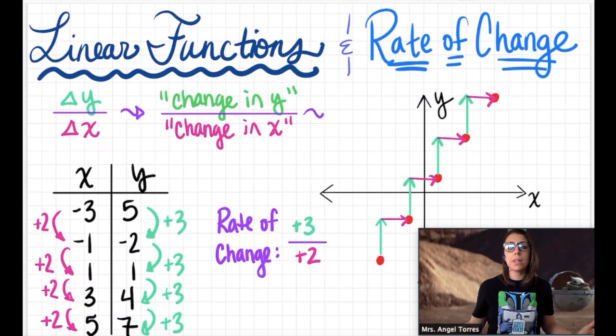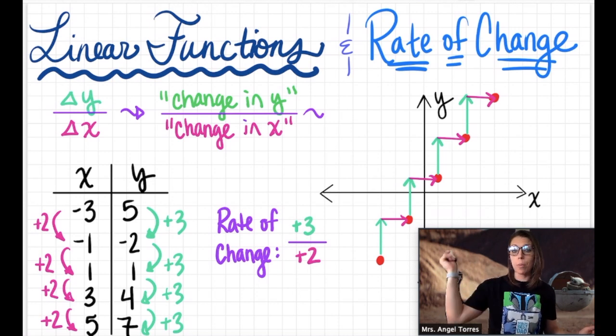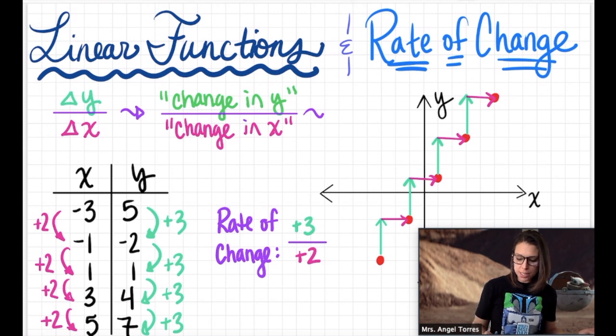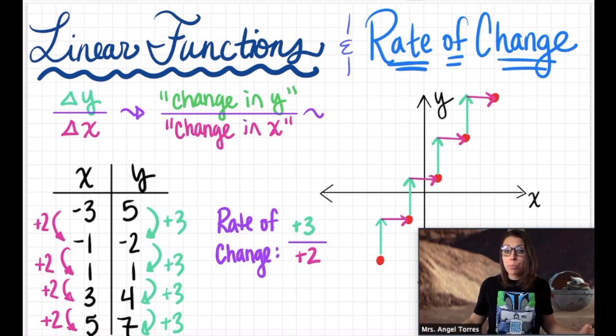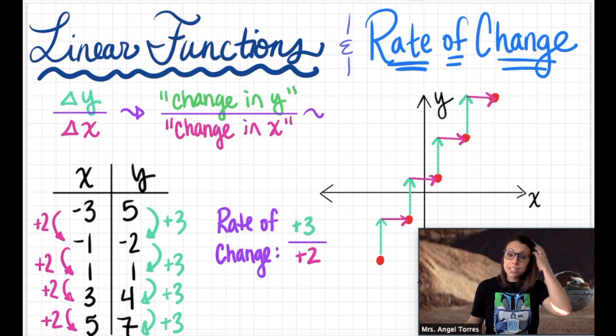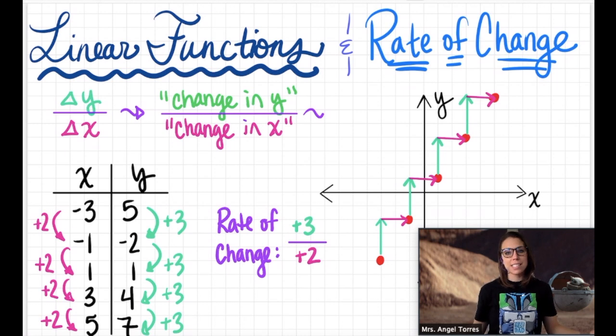So to quickly recap, linear functions are functions whose solution points form a line. In this original example, we had just been given these 5 points to show they were linear. But now we've learned in this video that this also means there's a pattern here, a rate of change. So how can you tell if a function is linear? Easy. If its points form a line and it has a constant rate of change or pattern, you're looking at a linear function. That's it for today's lesson. I will see you next time.